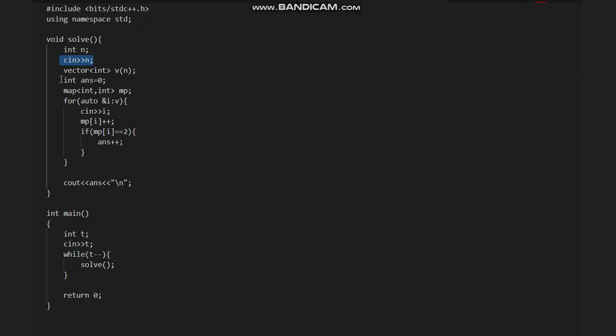Then initializing answer to zero. We take a map to store the count, so we are counting how many times an integer occurred. As soon as an integer occurred two times, we increment the answer by 1, and at last return our answer.